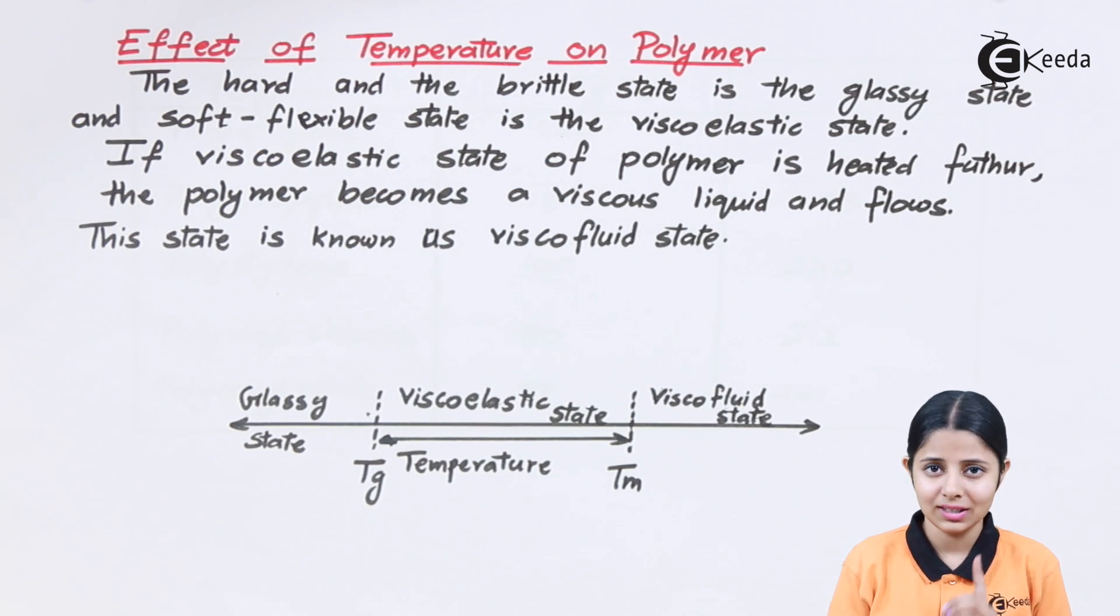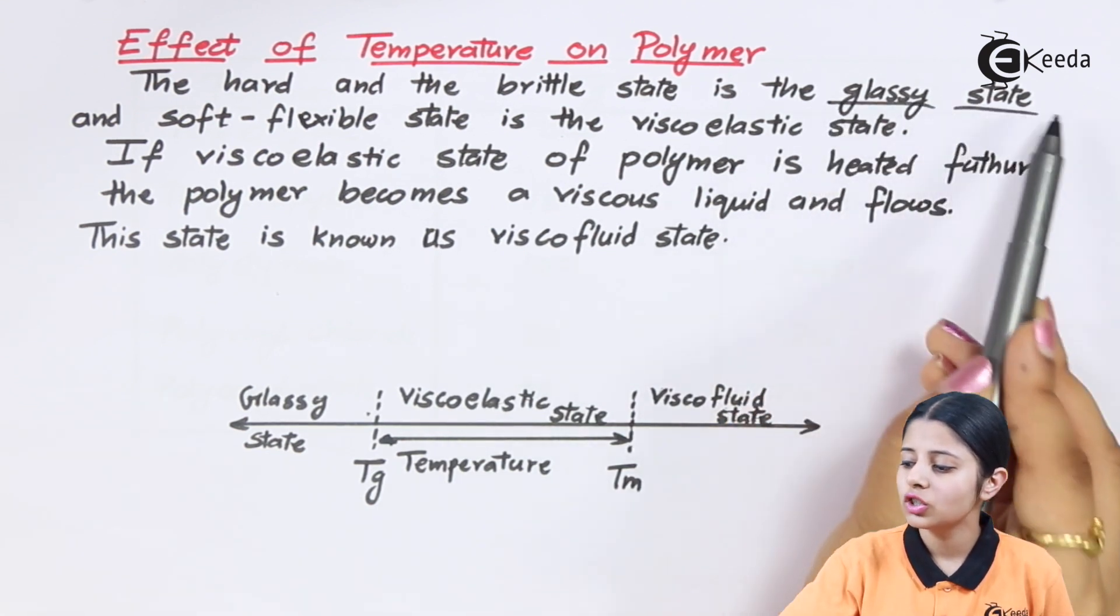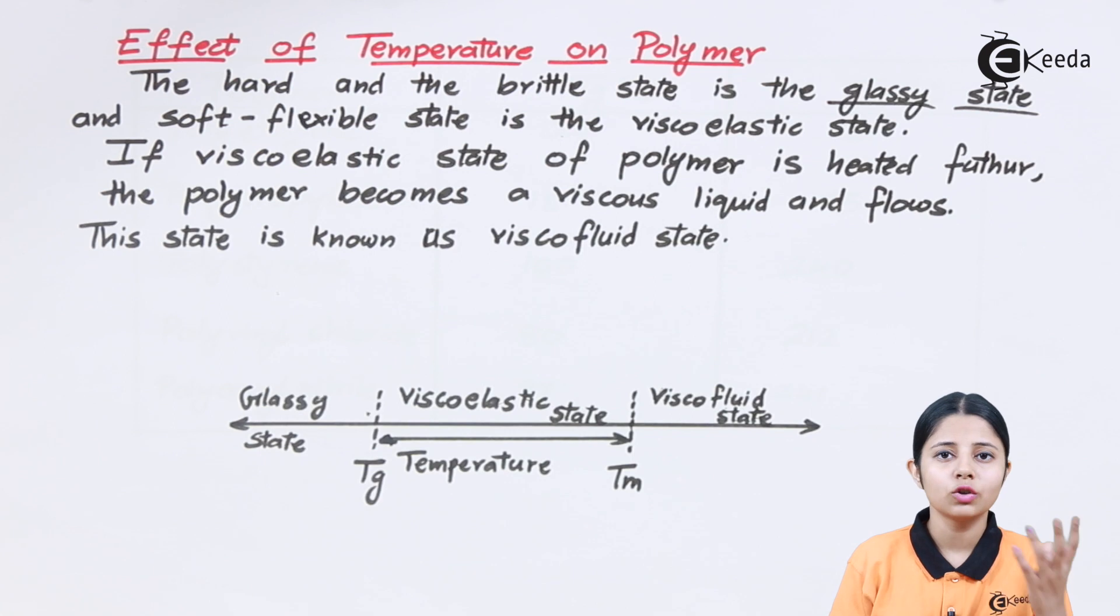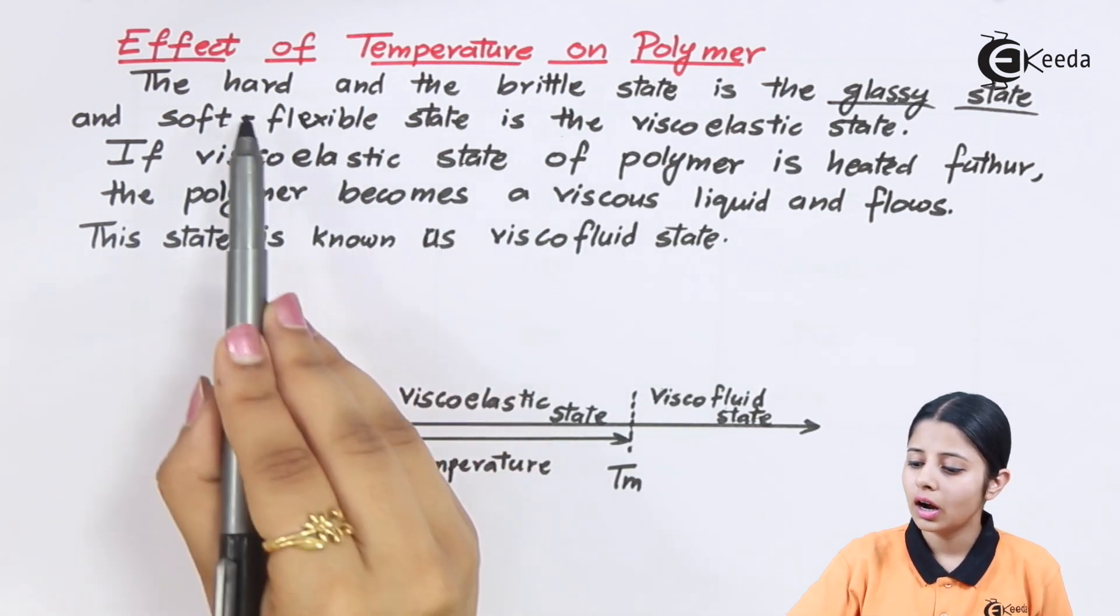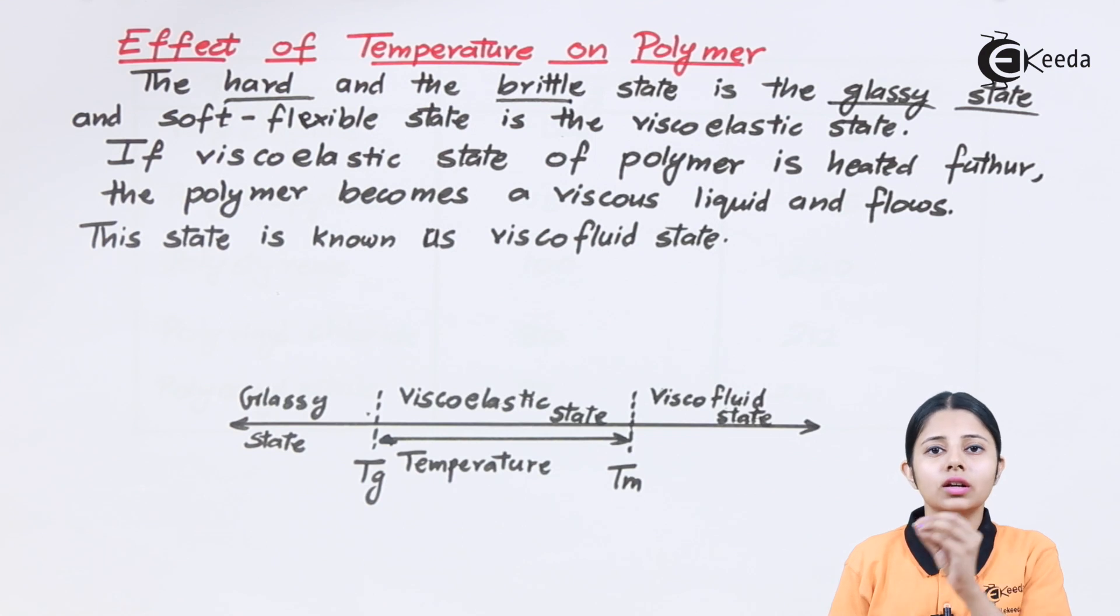The second state is defined as the viscoelastic state. Glassy state is where we will find all our polymers at room temperature. They are hard and brittle. Hard and brittle is the glassy state where they are generally formed.